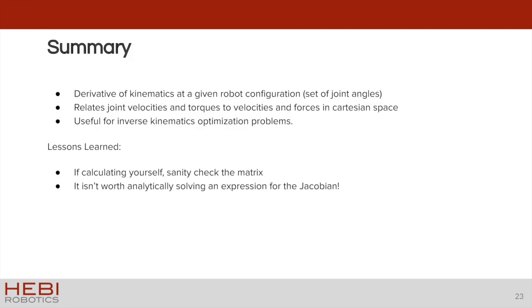So in summary, the Jacobian is the derivative of the kinematics expression that describes a particular frame of the robot with respect to its joint angles. This matrix is extremely useful and is used to relate velocities and forces between the robot's joints and the Cartesian space that the robot lives in. Finally, it can be used for solving inverse kinematics optimization problems as well. You will encounter this matrix frequently in robot control problems.